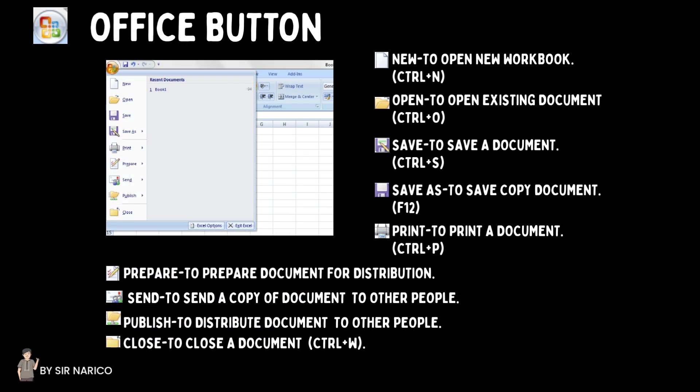The Office button includes the following: New to open a new workbook (Ctrl+N), Open to open an existing document (Ctrl+O), Save to save a document (Ctrl+S), Save As to save a copy of a document (F12), Print to print a document (Ctrl+P), Prepare to prepare a document for distribution, Send to send a copy of the document to other people, Publish to distribute a document to other people, and Close to close a document (Ctrl+W).